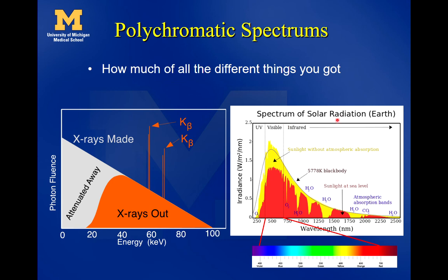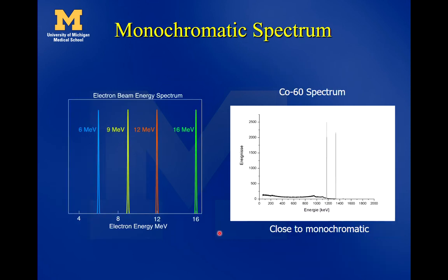Just like the sun produces red, yellow, green, blue, and violet light as a multicolored spectrum, our x-ray tube has a multicolored x-ray spectrum coming out of it. We end up with a polychromatic x-ray beam instead of just a monoenergetic x-ray beam.